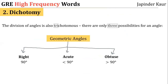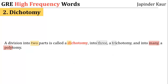The classification of geometric angles is also trichotomous. They can only be one of three possibilities: right, acute, or obtuse. A classification where even more than three categories are possible is known as a polytomy.